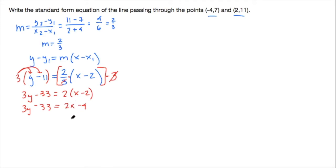We're getting closer. We want to get all the x's to the left-hand side, so I'm going to subtract 2x from both sides. I'm going to rewrite this, and when I do that, I'm going to put the x first, because that's our standard form. Negative 2x plus 3y minus 33 is equal to negative 4.